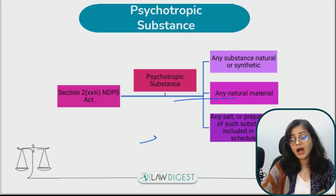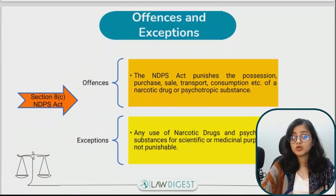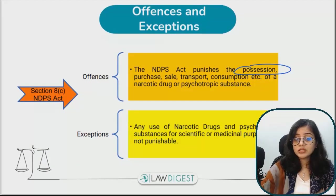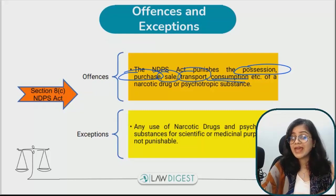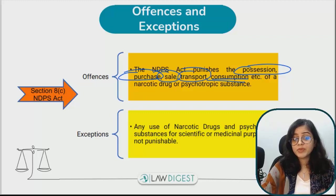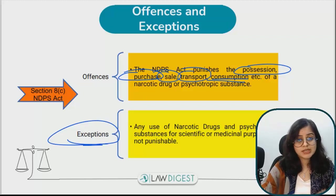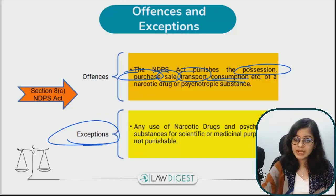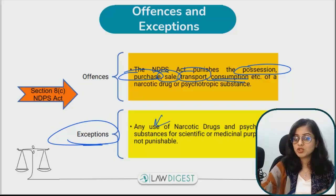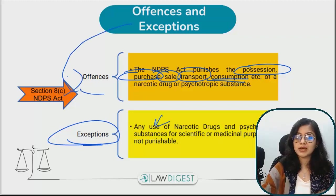This law covers not just consumption, but also possession, purchase, sale, and transport of any narcotic drug or any psychotropic substance — all these things are punishable. What are the exceptions? Obviously, there are some drugs that have medical properties, and companies use them for scientific and medical purposes. Their consumption, sales, purchase, and transport are not in the category of offenses.